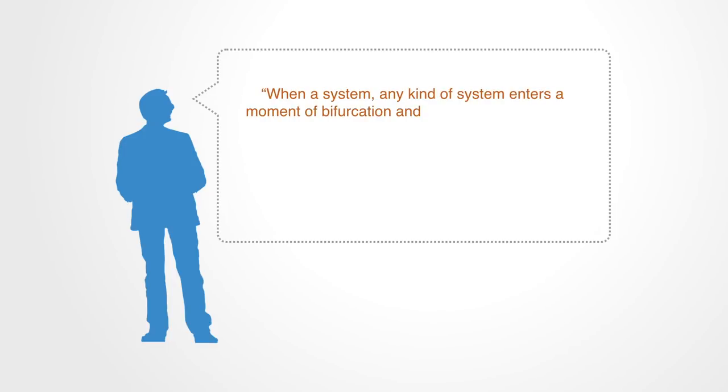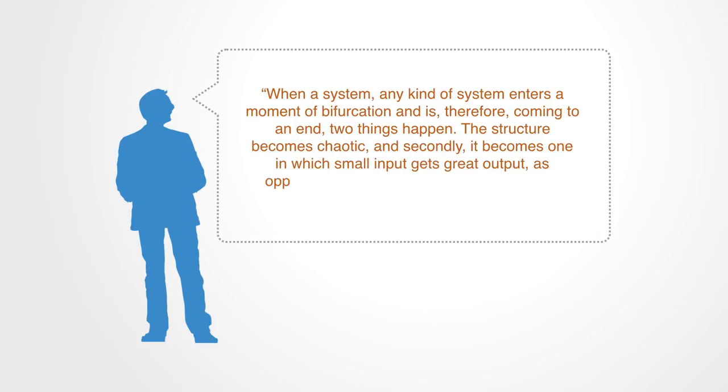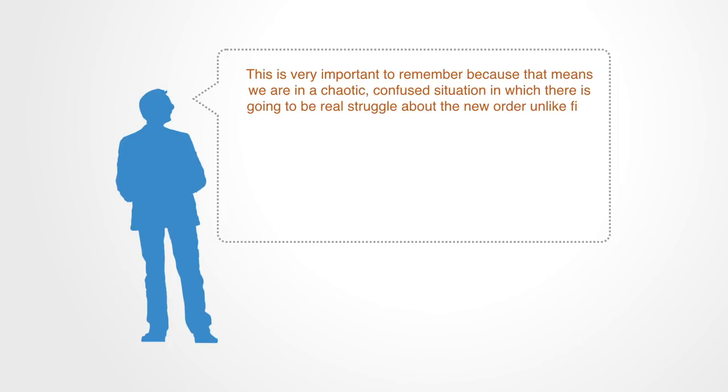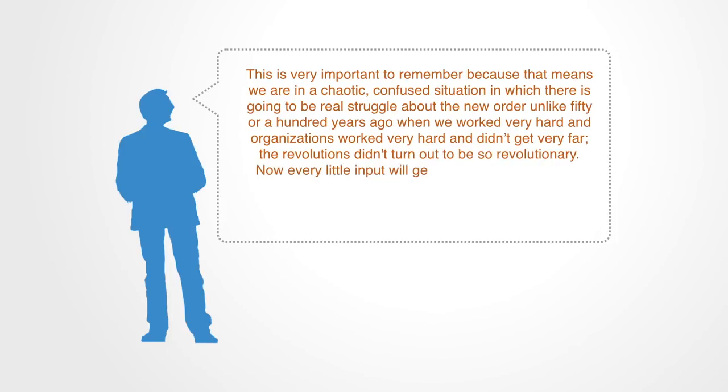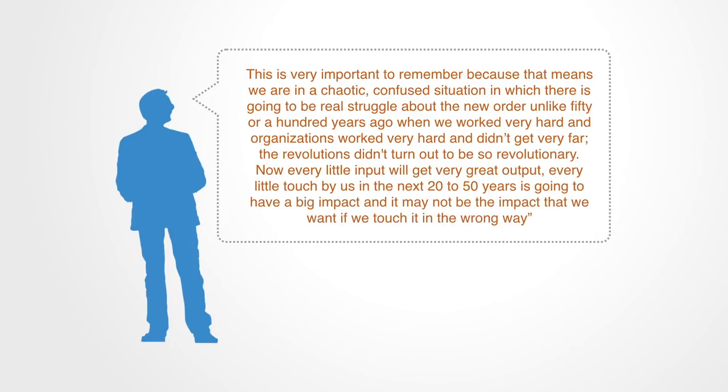The social scientist Immanuel Wallerstein talks about this process as such. When a system, any kind of system, enters a moment of bifurcation and is, therefore, coming to an end, two things happen. The structure becomes chaotic, and secondly, it becomes one in which small input gets great output, as opposed to a normally functioning system in which great input gets great output. This is very important to remember, because that means we are in a chaotic, confused situation in which there is going to be real struggle about the new order. Unlike fifty or a hundred years ago, when we worked very hard, and organizations worked very hard, and didn't get very far. The revolutions didn't turn out to be so revolutionary. Now every little input will get very great output. Every little touch by us in the next twenty to fifty years is going to have a big impact, and it may not be the impact that we want if we touch it in the wrong way.